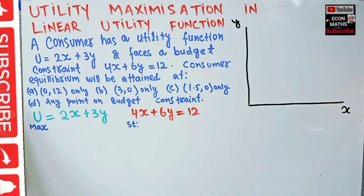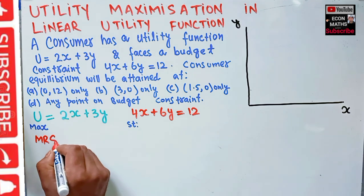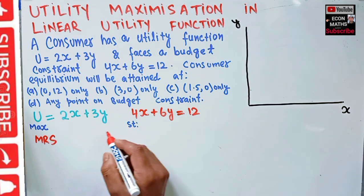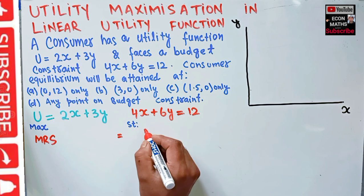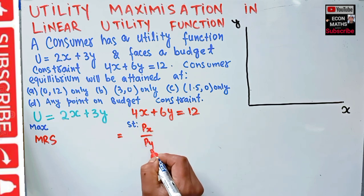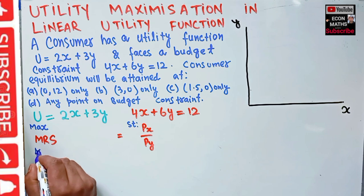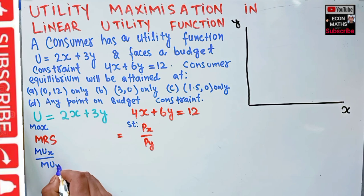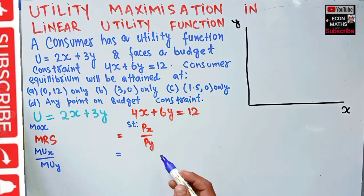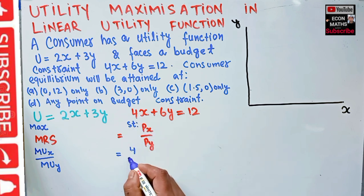Consumer equilibrium requires that the marginal rate of substitution between the two goods should be equal to the ratio of the prices — that is, Px upon Py. MRS is simply marginal utility of good x upon marginal utility of good y, and it should equal the price ratio Px/Py. The price of good x is 4 and price of good y is 6.